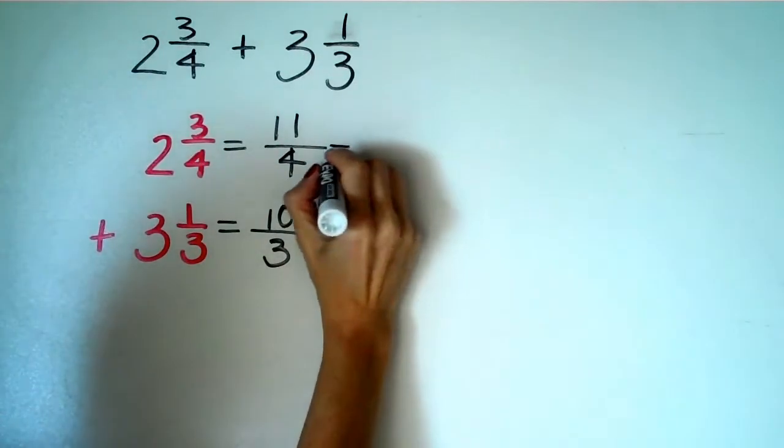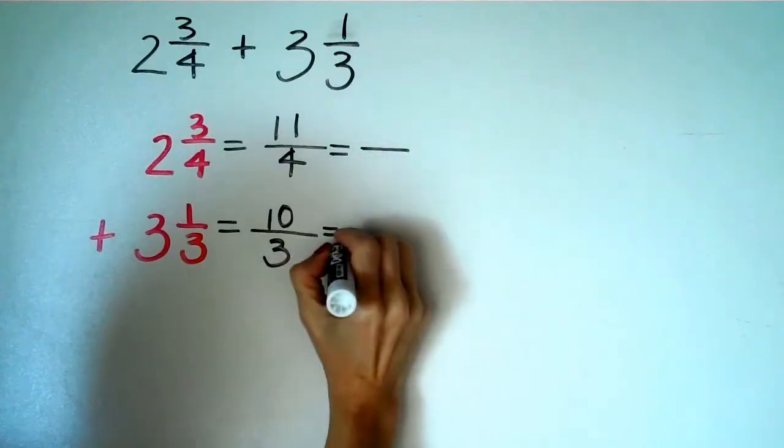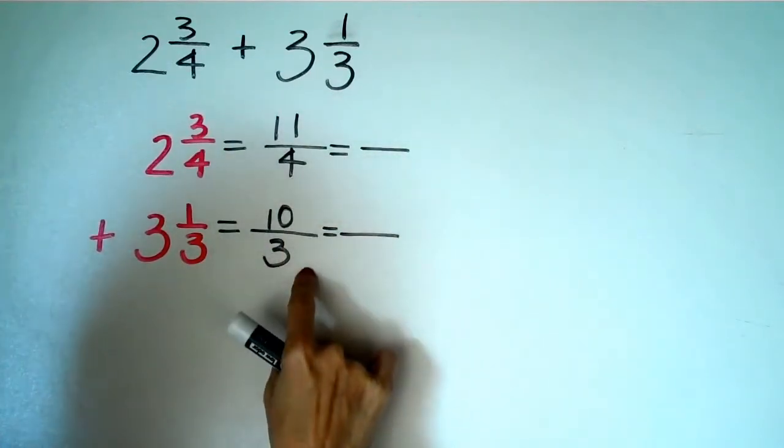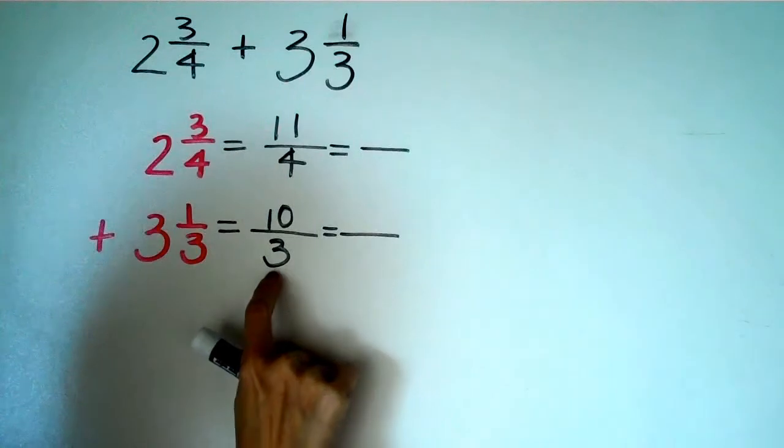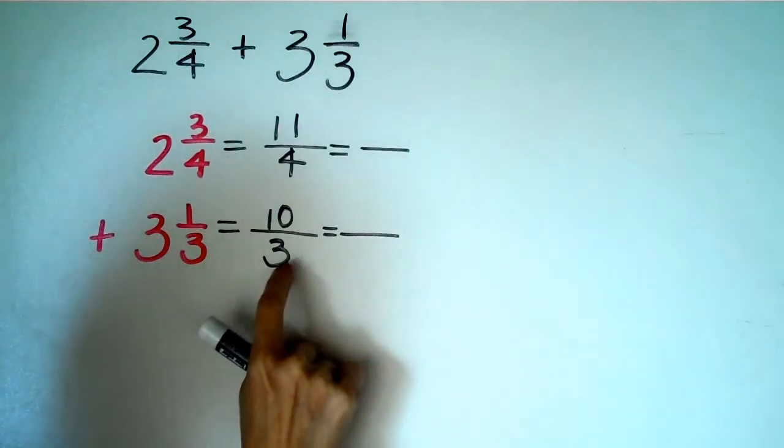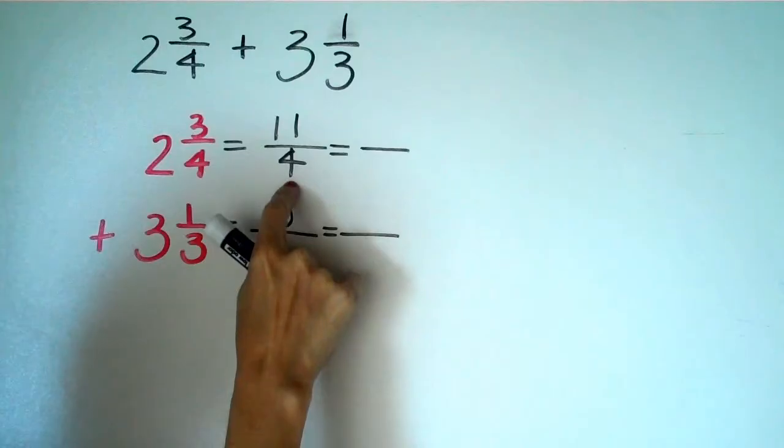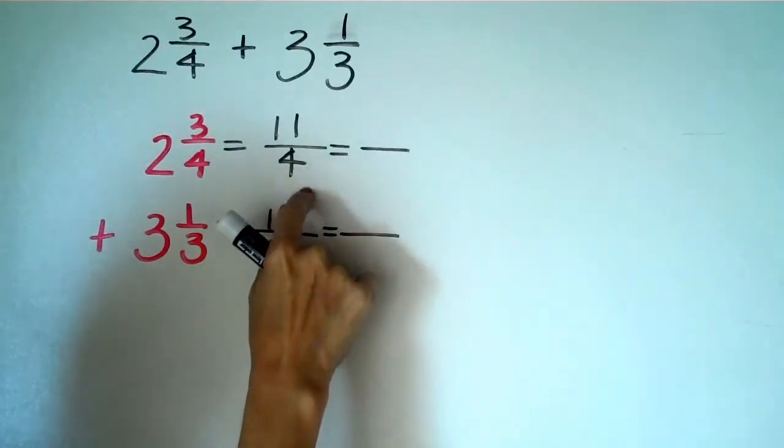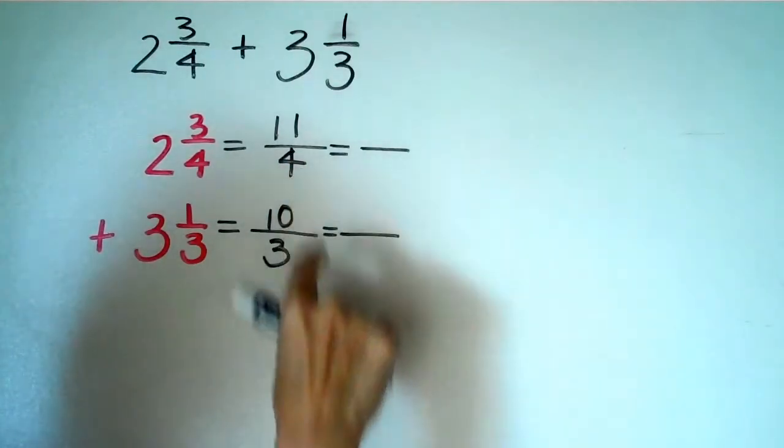So now I recall what I have to do was change that now into something with the same denominator. And I know the multiples of three are three, six, nine, twelve. The multiples of four are four, eight, twelve, sixteen. And I did say twelve two times.